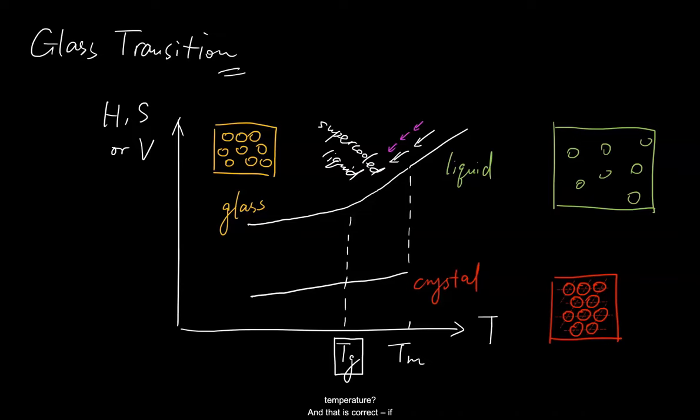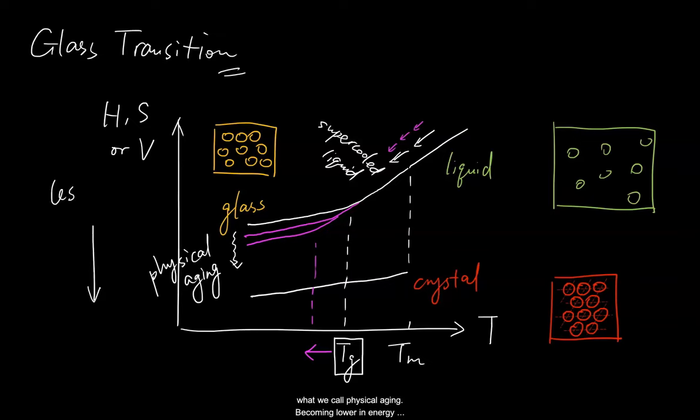And that is correct. If cooling rate is reduced, the resulting glass does land on a lower energy landscape, and glass transition would also take place at a lower temperature. So not all glasses are created equal. And since glasses are non-equilibrium states, they have the tendency to approach energetically lower states spontaneously at almost any temperature. This process is what we call physical aging. Becoming lower in energy also means becoming more stable. That is, in this graph, stability increases going from up to down.